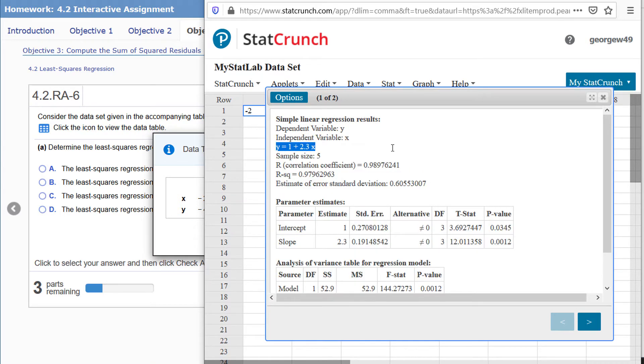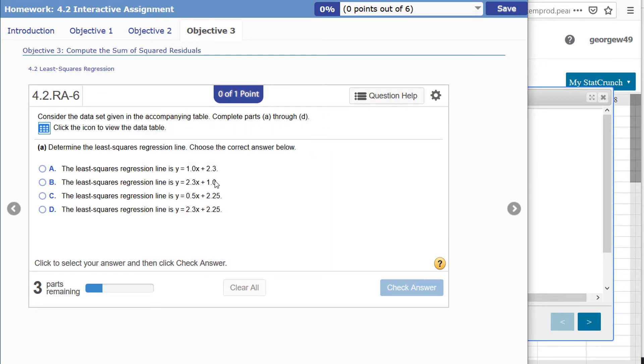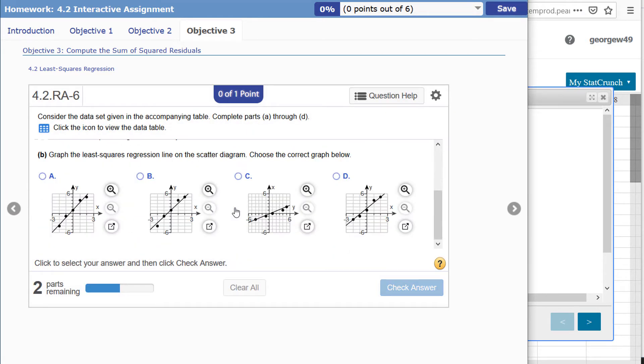I can see my equation at the top here. It's y equals 1 plus 2.3x, or y equals 2.3x plus 1, and that is option B for me. So that is the line of best fit, it's the least squares regression line.